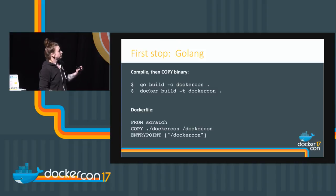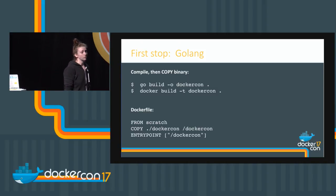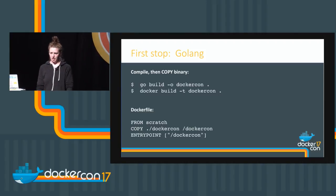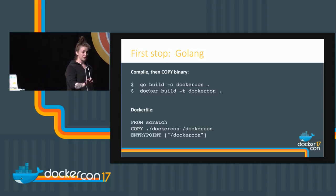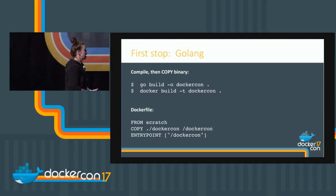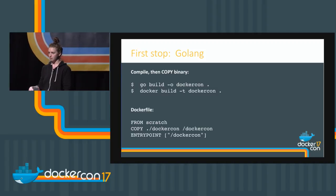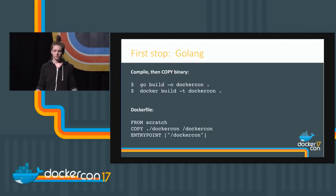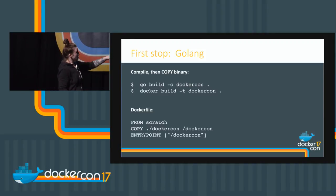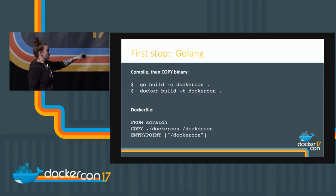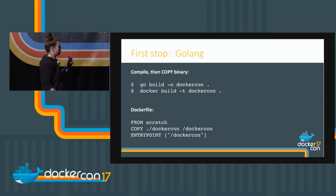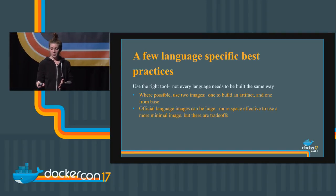First stop: Golang. Go, Ruby, and Java tend to be extra huge, but life doesn't have to be like that. Go is a good place to use Scratch — basically an empty image with nothing in it. I can compile my Go stuff and then copy the binary over. From my Dockerfile, I just run 'FROM scratch', copy my stuff over, and run my app. I can build an artifact, then use that somewhere else — building it, copying it, running it somewhere else — without needing all the build tooling in the final image.